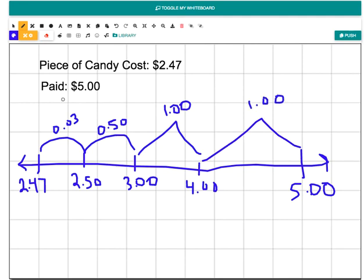After I do this, all I have to do is add my money together. I have $1, $2. So we would add them all together. $1, $2, $1.50, and $1.53. So $1.53 would be my change.